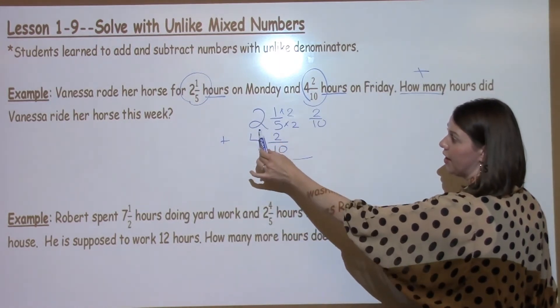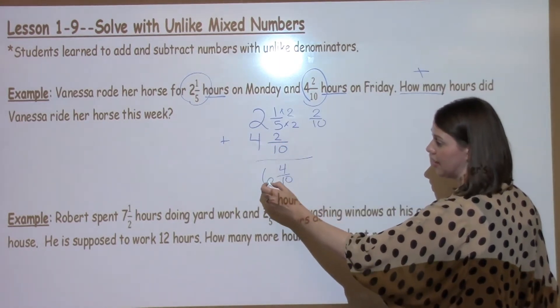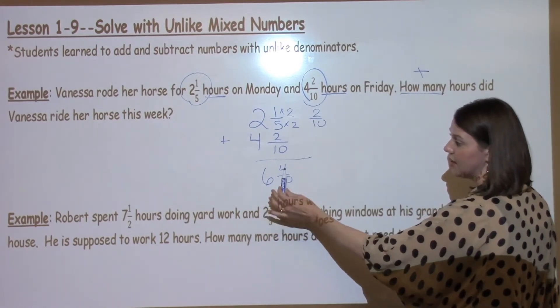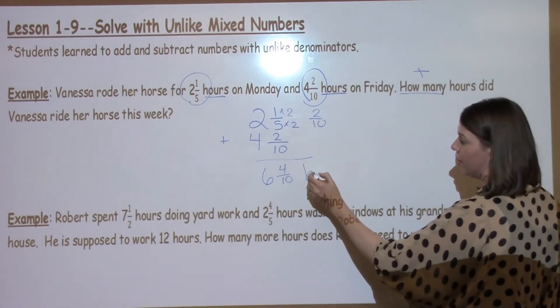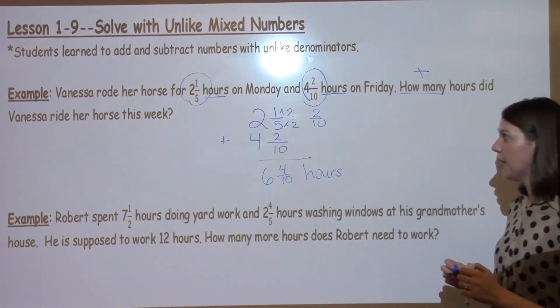When I add my whole numbers over here, I have 2 plus 4, which is 6. My answer is 6 and 4 tenths hours. That's how long Vanessa rode her horse this week.